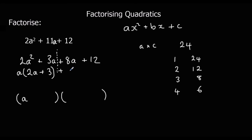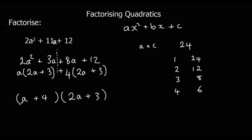We factorise the second part as well. We've got 8 and 12, so the common factor there is 4. 4 times 2a makes 8a, and 4 times 3 makes 12. So we've got the same bracket — 2a plus 3 — appearing in both halves, which is what we wanted. We've got a multiplied by both of them, and then 4 multiplied by both of them. This is just another way of writing (a plus 4)(2a plus 3). So this is factorised and this is our final answer.